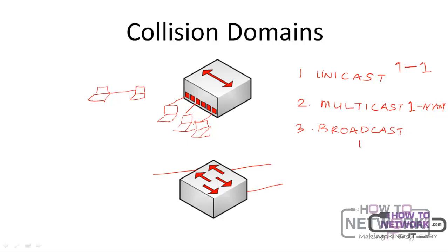For broadcast, you send from one device to everybody, or to all. When you send a broadcast — for instance, a computer connected to a switch sends a broadcast message — the broadcast message is going to be received by all the ports on that switch. And if you have a switch connected to another switch, the broadcast message will be received by all the ports on both switches. So regardless of the number of switches, you are still in what is called a broadcast domain.